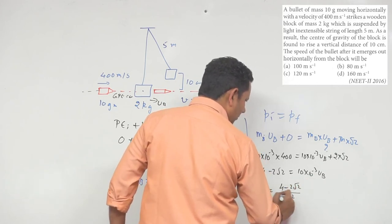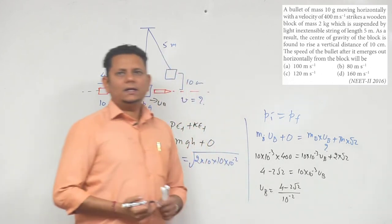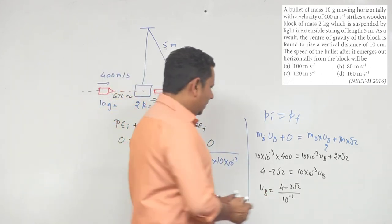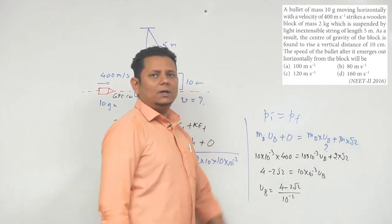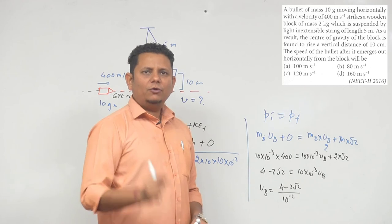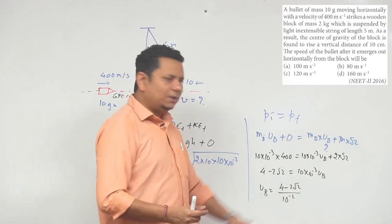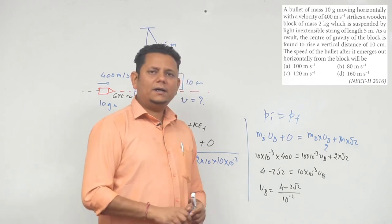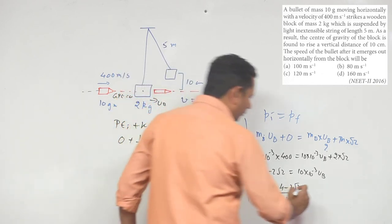Calculating: 4 minus 2 root 2. Root 2 is approximately 1.4, so 1.4 multiplied by 2 equals 2.8. Then 4 minus 2.8 equals 1.2, multiplied by 10 to the power 2. So the velocity of bullet